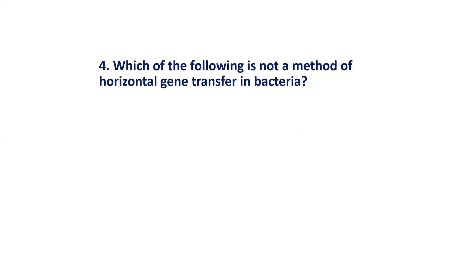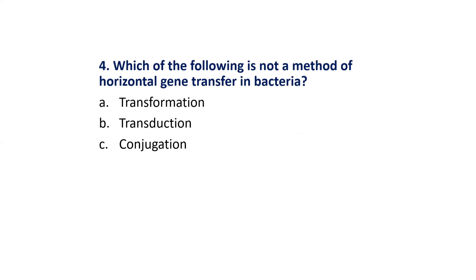MCQ 4: Which of the following is NOT a method of horizontal gene transfer in bacteria? Options are: Transformation; Transduction; Conjugation; Binary fission. The correct answer is Option D: Binary fission.